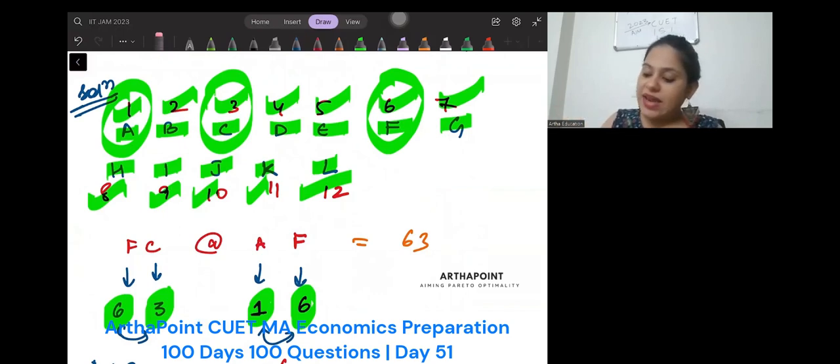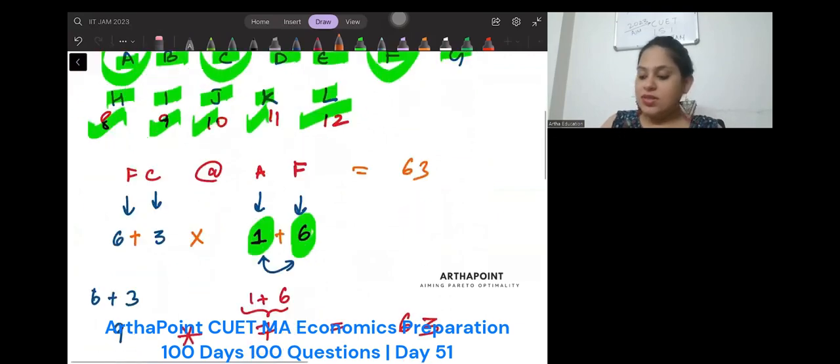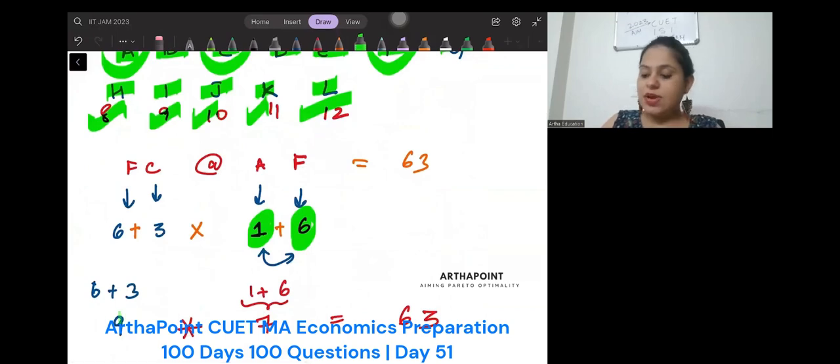So maybe can I do something like this, let me introduce a plus sign here and here and a multiplication sign here. Then 6 plus 3 will become 9, 6 plus 1 will become 7, and yes, 9 into 7 will become 63. So we have found the 63, right?